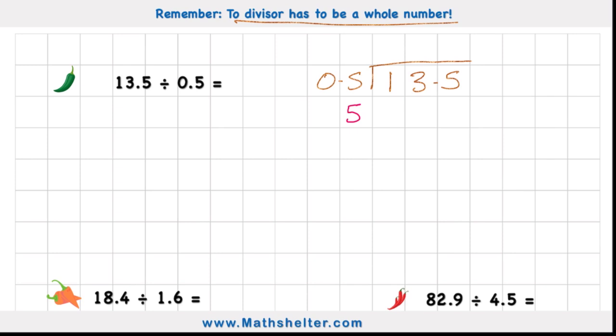But if I'm going to do that to my divisor, I also need to do that to the dividend to keep my question equivalent. And the way I'm going to do that to my dividend is also multiply it by 10. So 13.5 would become 135. So let's tidy this up with our new numbers inside our bus stop.